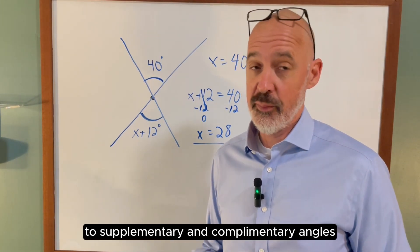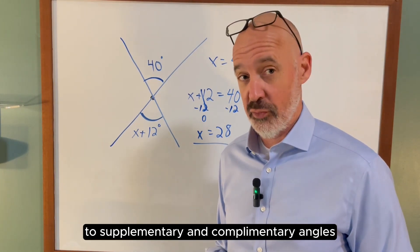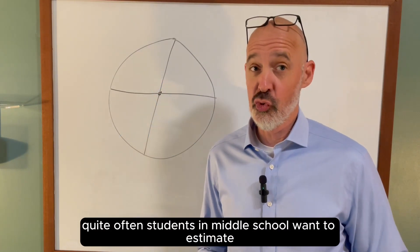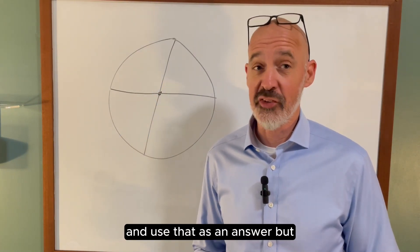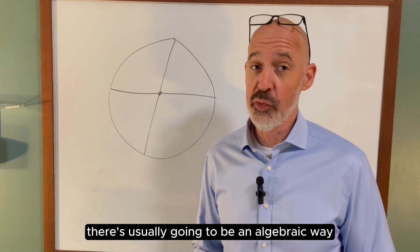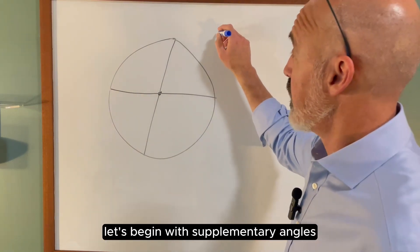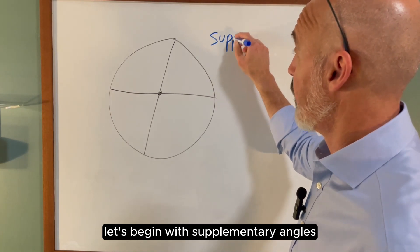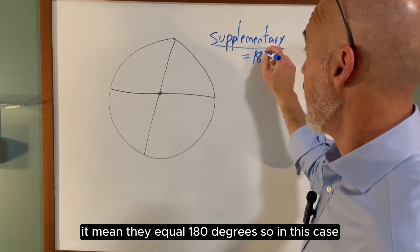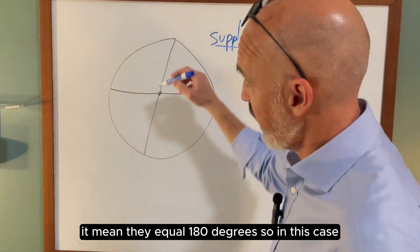Now let's move on to supplementary and complementary angles. Quite often students in middle school want to estimate and use that as an answer, but there's usually going to be an algebraic way to figure it out. Let's begin with supplementary angles—they equal 180 degrees.